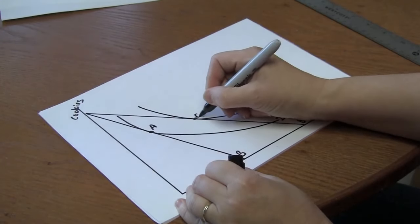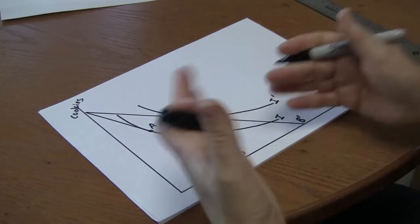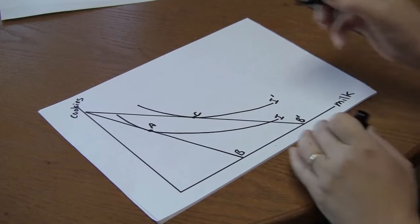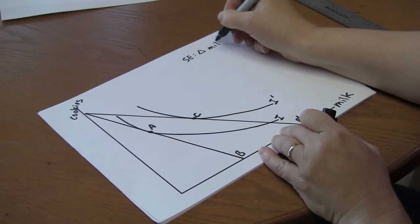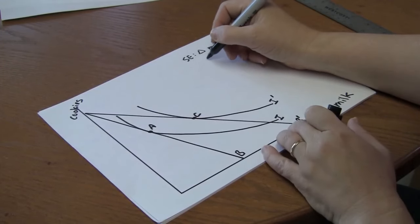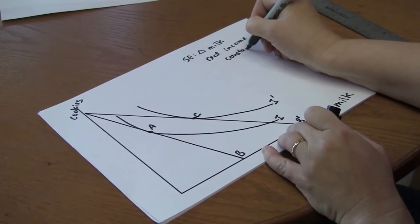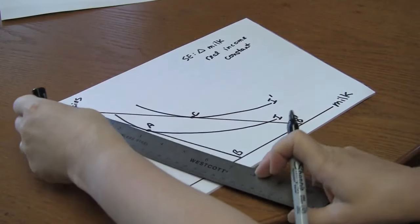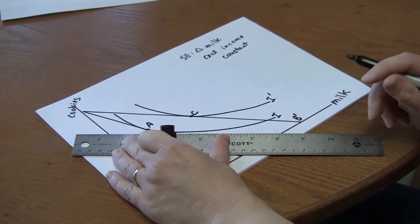Original choice, choice after the price decrease. Now I want to break down that change in consumption choices into a substitution effect and an income effect. The substitution effect is equal to the change in milk consumed holding real income constant. What that means is it's the effect of the price decrease keeping the consumer on the original indifference curve.